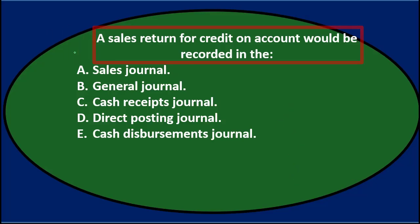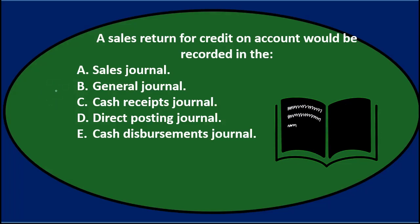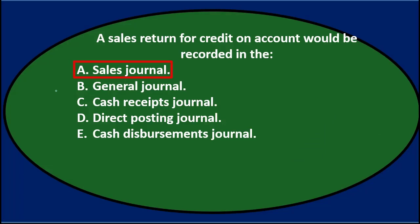A sales return for credit on account would be recorded in the A. Sales Journal. The Sales Journal is what we use to record the sale — it's a very specific journal, only for sales. It records a debit to accounts receivable and a credit to sales, and on a perpetual inventory system, a debit to cost of goods sold and a credit to inventory. It won't work for the sales return because we would have to reverse all that, and the columns aren't set up to do that. So it can't be the Sales Journal.